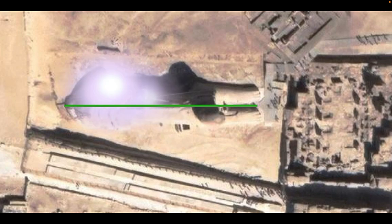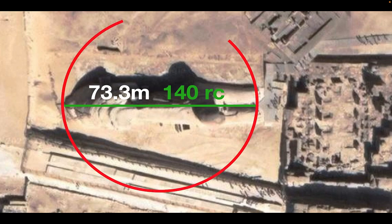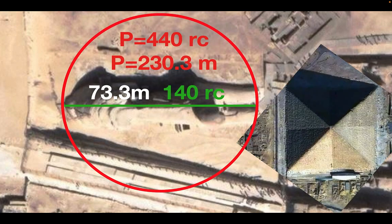The length of the Sphinx is the same as the distance between the boat pits on the Great Pyramid: 73.3 meters, which is 140 royal cubits. Since that's a diameter, we multiply by pi to get our circumference, which ends up being 230.3 meters or 440 royal cubits — and amazingly, that is the length of the side of the Great Pyramid: 440 royal cubits.